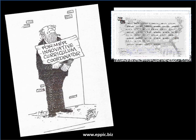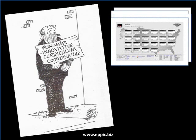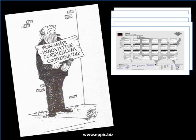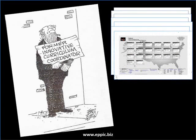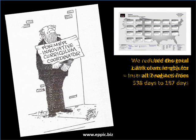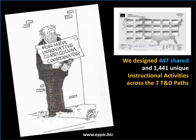The differences in the paths were due to the different regions that the customer's training organization resided in. They were responsible for call center salespeople who sold in designated states, each with their own different laws, regulations, and codes, driving a differential in the product configurations. Sometimes call waiting could be bundled with call forwarding, and at other times not. We designed over eighteen hundred content objects, which in the PAC processes were referred to as instructional activities.